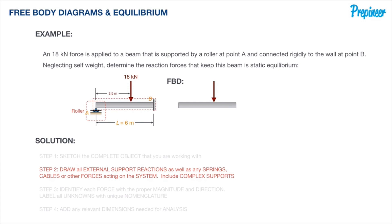The type of connection at these points is what determines what the basic reaction will look like. We have a roller at point A and a rigid connection at point B, a fixed connection.